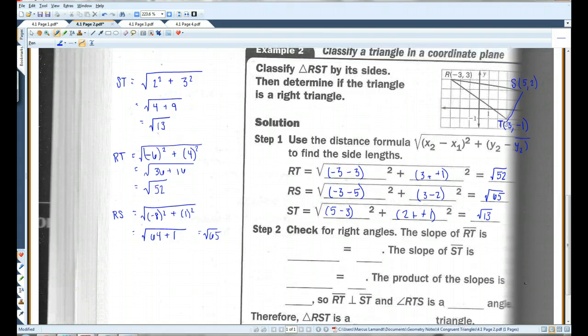So, already we can kind of tell, because all three sides are different lengths, it's going to be a scalene triangle. Now, let's look for right angles. We can kind of see that this one is not a right angle, and hopefully, I think we can kind of see that this one's not a right angle either. This is the only one that looks like it might be a right angle.